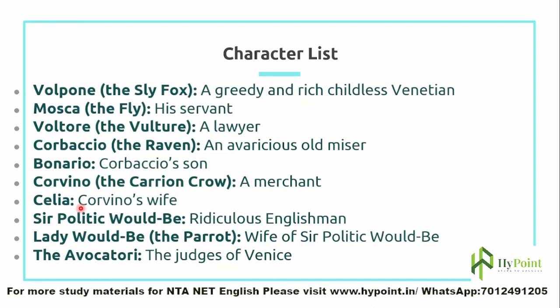Corvino is symbolized as a carrion crow — remember that — and he is a merchant. Celia is Corvino's wife. Bonario and Celia are the good, fair-minded people in this play. Virtually all other characters, except the judges of Venice, are cunning — they want wealth by dishonest means, are legacy hunters, and are greedy and lustful. Sir Politic Would-Be is a ridiculous Englishman, and Lady Would-Be — referred to as the parrot — is his wife. The Avocatori are the judges of Venice.